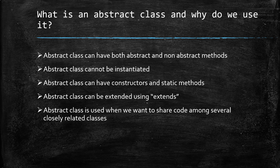An abstract class is used when we want to share code among several closely related classes — think of it as a structure acting as a framework for other classes. Abstract classes don't support multiple inheritance; only interfaces enable that in Java. Both abstract class and interface questions are very important, and you should also prepare for the differences between them, as that is a favorite interview question.